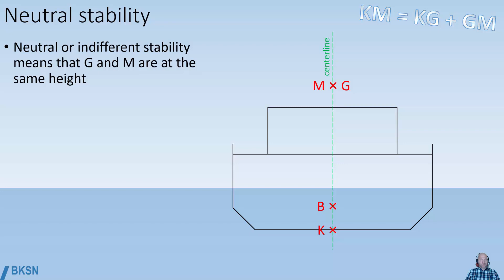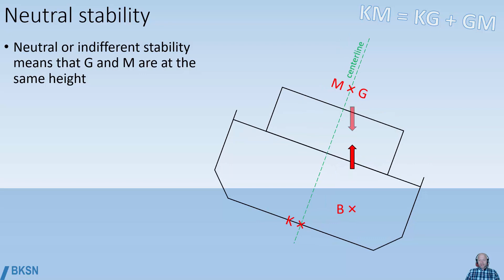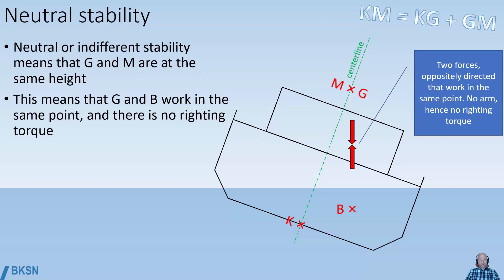Neutral or indifferent stability means that G and M are at the same height. If the vessel is then heeled over, we see that G and B, the forces through them, work in the same point, and thus, when there's no arm, there is no torque.